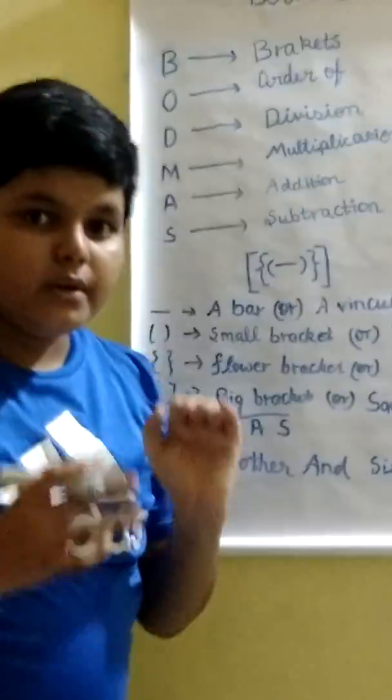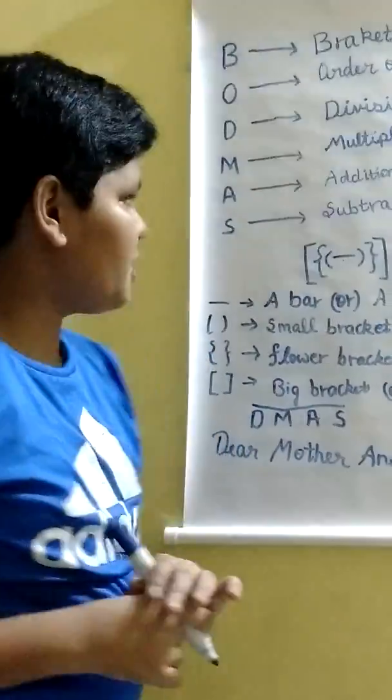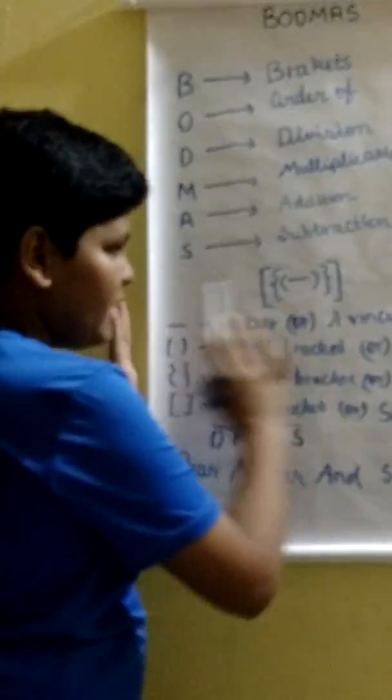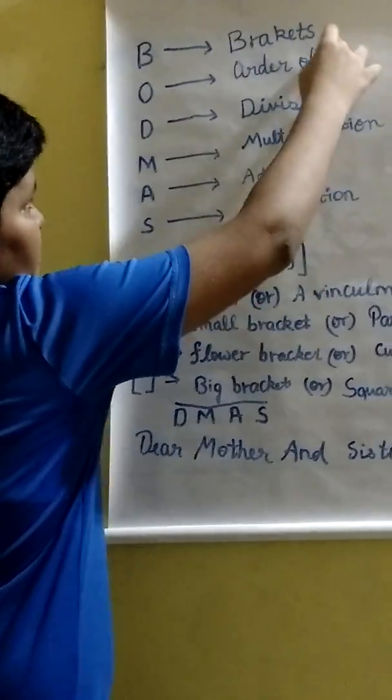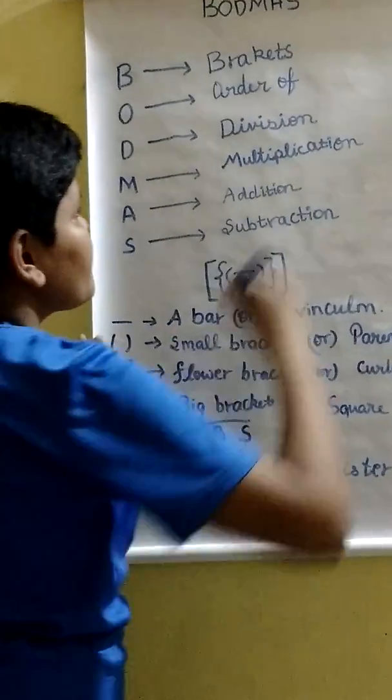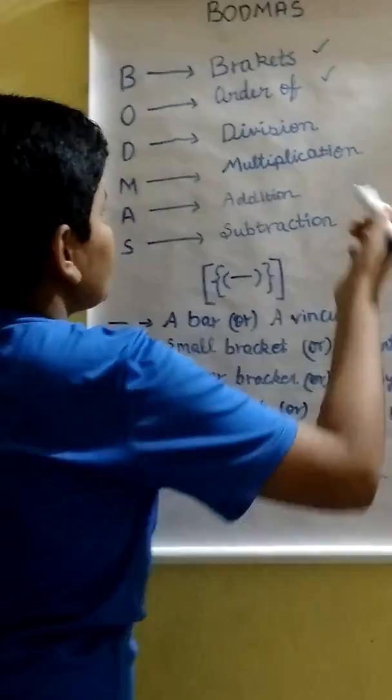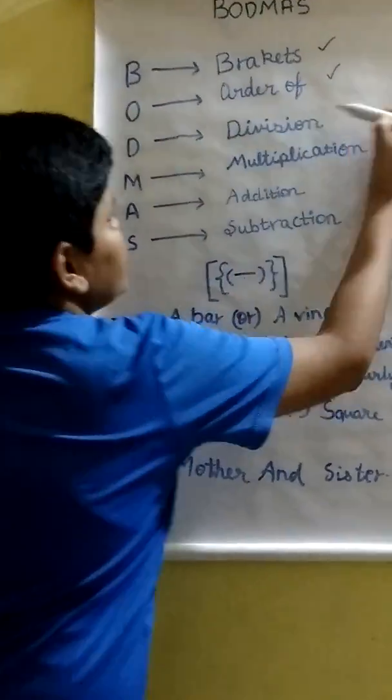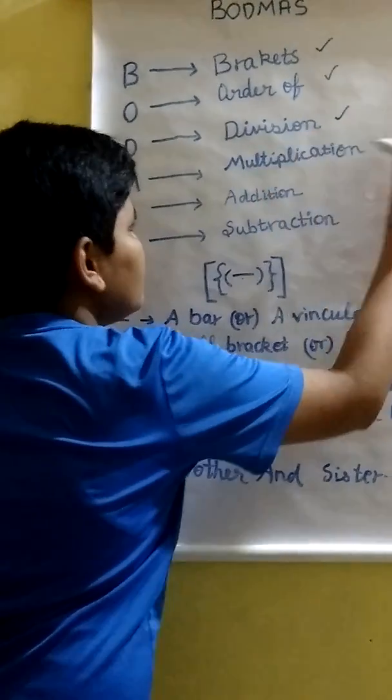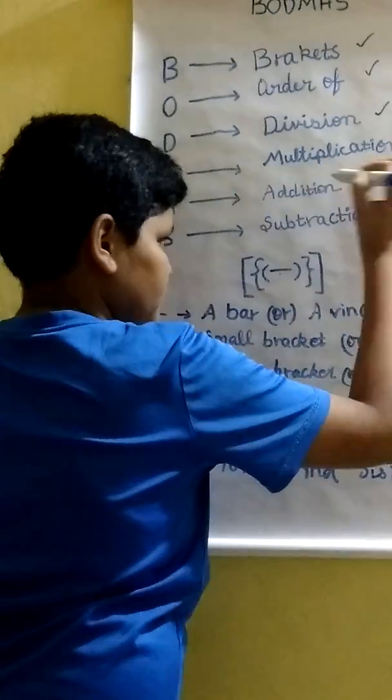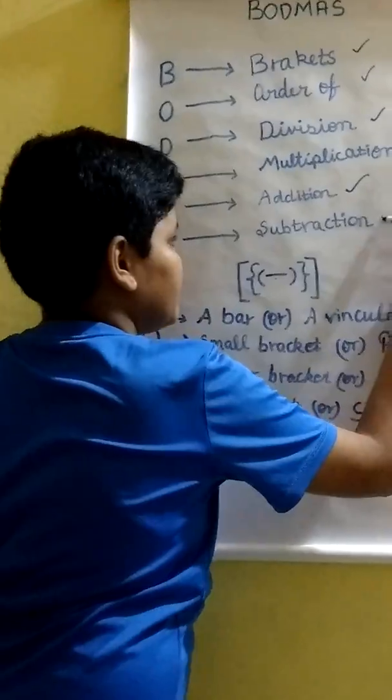Now, if you want to solve any problem using this BODMAS rule, first we have to simplify the brackets, then the order which is the exponents, then we have to simplify division, then the multiplication, then the addition and lastly subtraction.